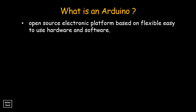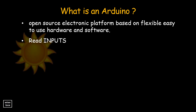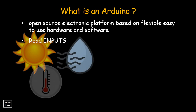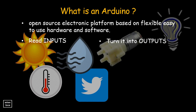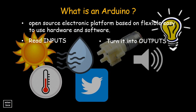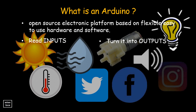The Arduino has the capability to read inputs such as light on a sensor, a finger on a button, distance of objects, moisture, humidity, ambient temperature, vibrations, a Twitter message, or a messenger text. It can also turn these inputs into outputs like activating a motor, turning on an LED, lighting a bulb, making sound, producing movement, displaying information, or publishing something online.